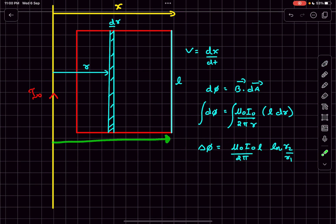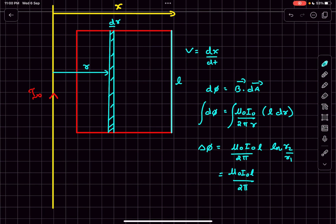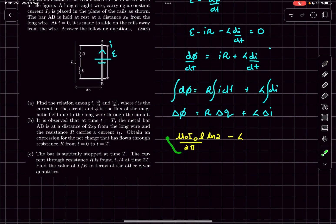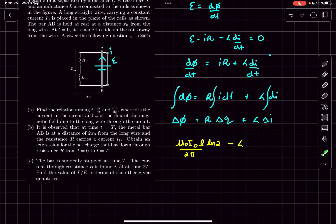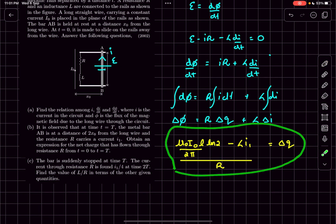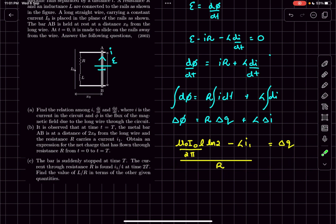Integrating, we get the expression for the change in flux. Initially the metal rail was at x₀ from the wire and finally at 2x₀, so the ratio r₂/r₁ = 2, giving ΔΦ = (μ₀i₀l / 2π)·ln(2). Plugging back into the main equation: Δi = i₁ − 0 = i₁ (since at t = 0 there was no current, and at t = T the current is i₁). So the charge Q = [ΔΦ − L·i₁] / R. This is the charge that has flown through the resistor from t = 0 to T.